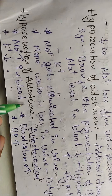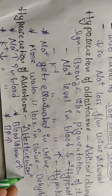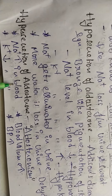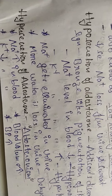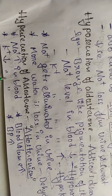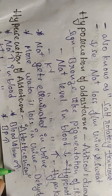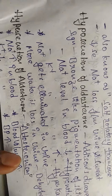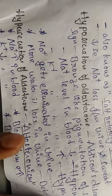In hypersecretion of aldosterone, sodium concentration in blood increases, and potassium ion concentration in blood also increases. Blood volume increases as well, which may lead to increased blood pressure — a condition called hypertension.